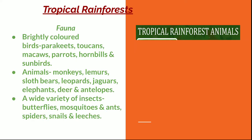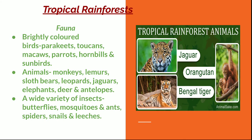Now the fauna of the tropical rainforest — that is the animals. There are lots of animals here, as there are lots of trees. There are brightly colored birds like parakeets, toucans, macaws, parrots, hornbills and sunbirds. Animals like monkeys, lemurs, sloth bears, leopards, jaguars, elephants, deer and antelopes. A wide variety of insects are also found: butterflies, mosquitoes, spiders, snails and leeches.